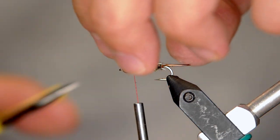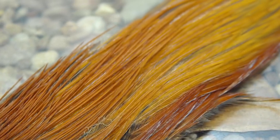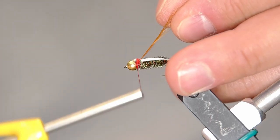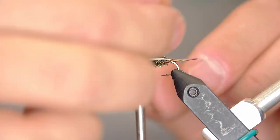Now it's time to trim off those goose biets and then what I'm going to do is wrap a ginger hackle around the collar. Just a few turns, nothing too crazy. This is just to give it a little bit of movement, give it a little bit of that life when it's in the water.